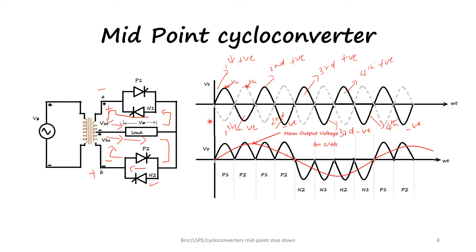So if we see, with four cycles of the input voltage we have got an average of only one cycle. So this is one fourth of the supply frequency. That is why we call it a step down cycloconverter, and here the output frequency is 1/4 of the supply frequency. If the switches are operated for more number of times, any frequency required can be obtained.